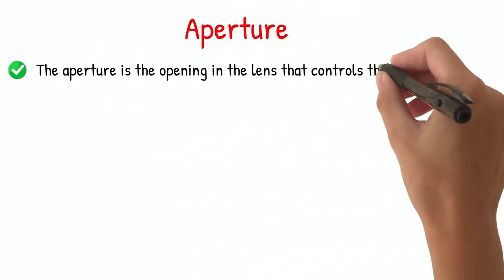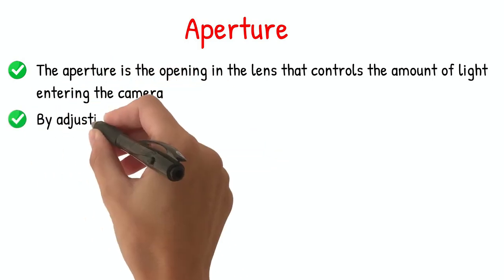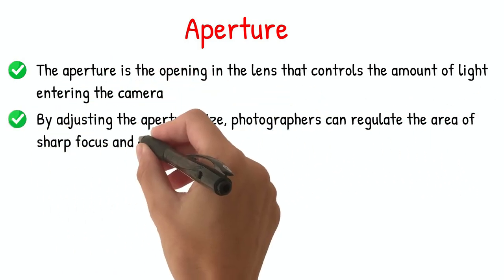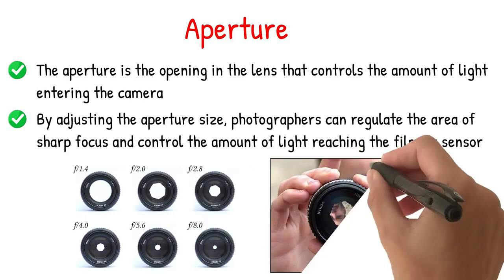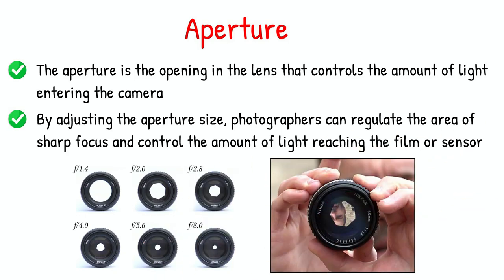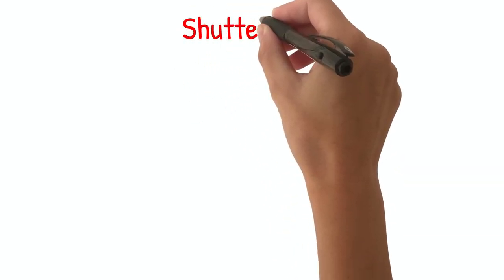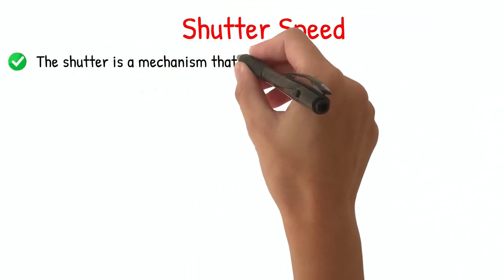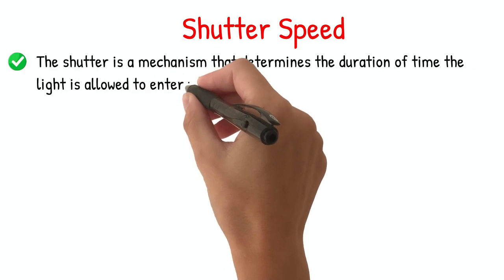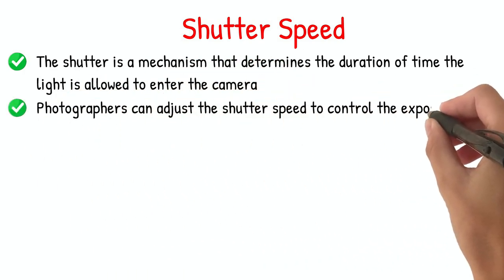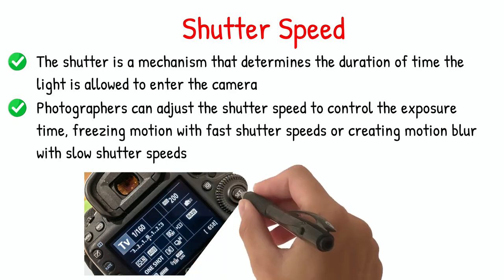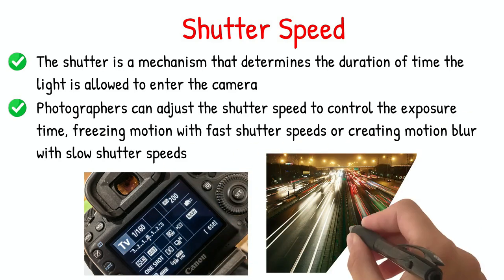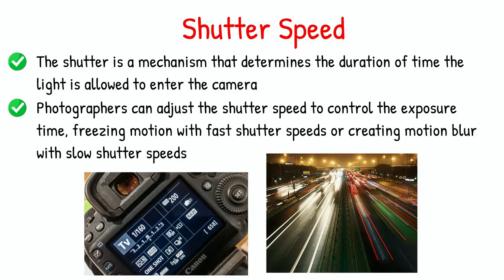The aperture is the opening in the lens that controls the amount of light entering the camera. By adjusting the aperture size, photographers can regulate the area of sharp focus and control the amount of light reaching the film or sensor. The shutter is a mechanism that determines the duration of time the light is allowed to enter the camera. Photographers can adjust the shutter speed to control the exposure time, freezing motion with fast shutter speeds or creating motion blur with slow shutter speeds.